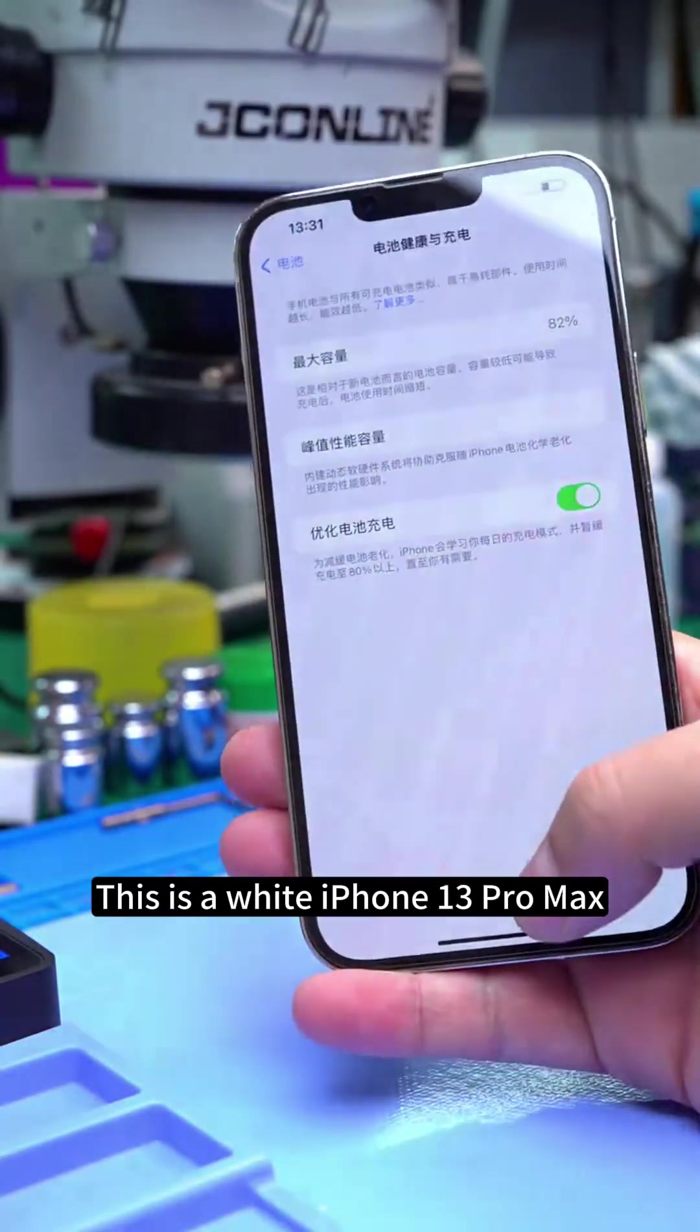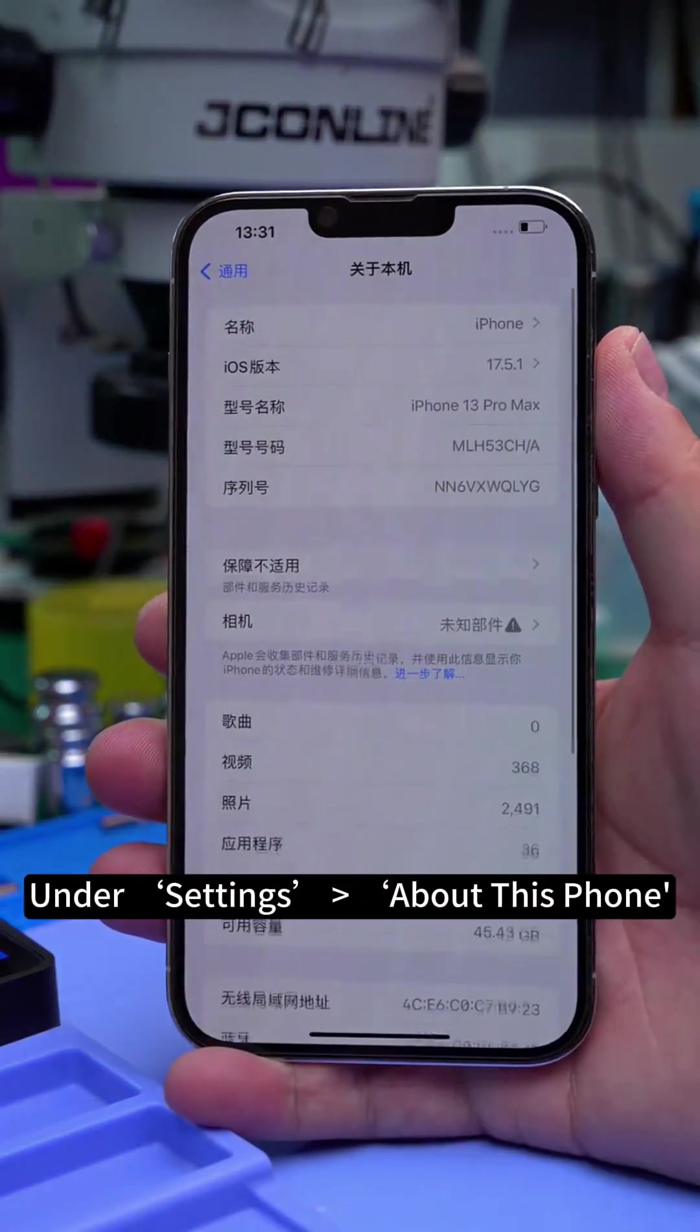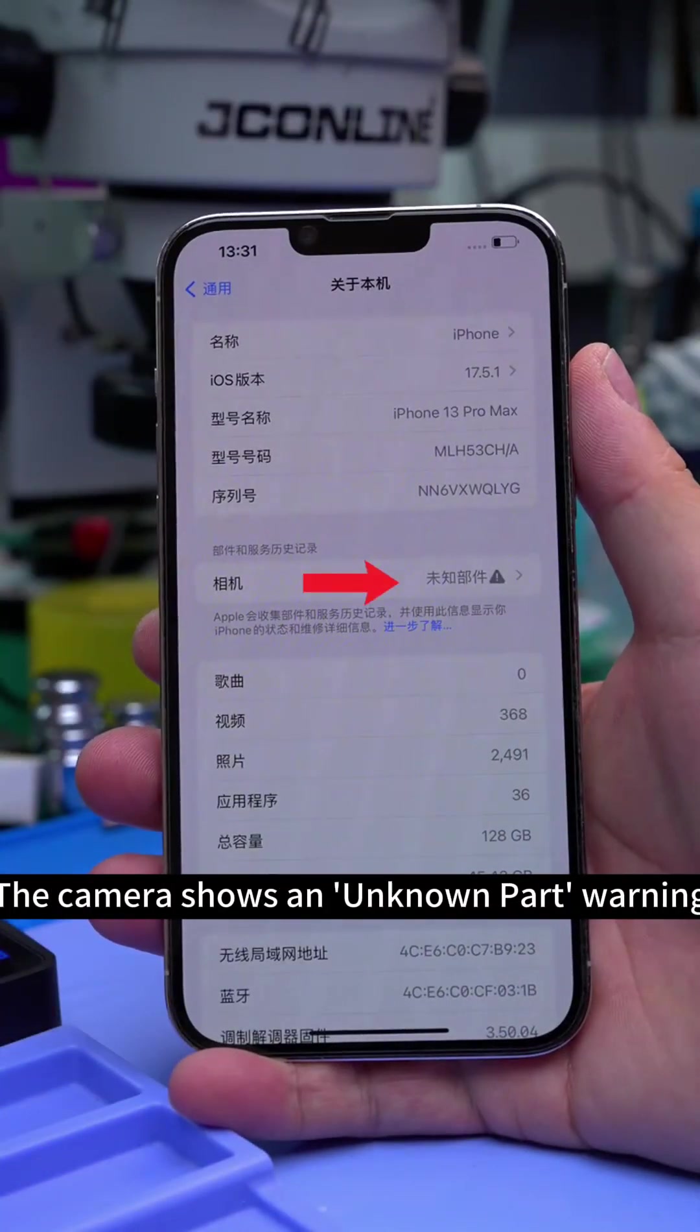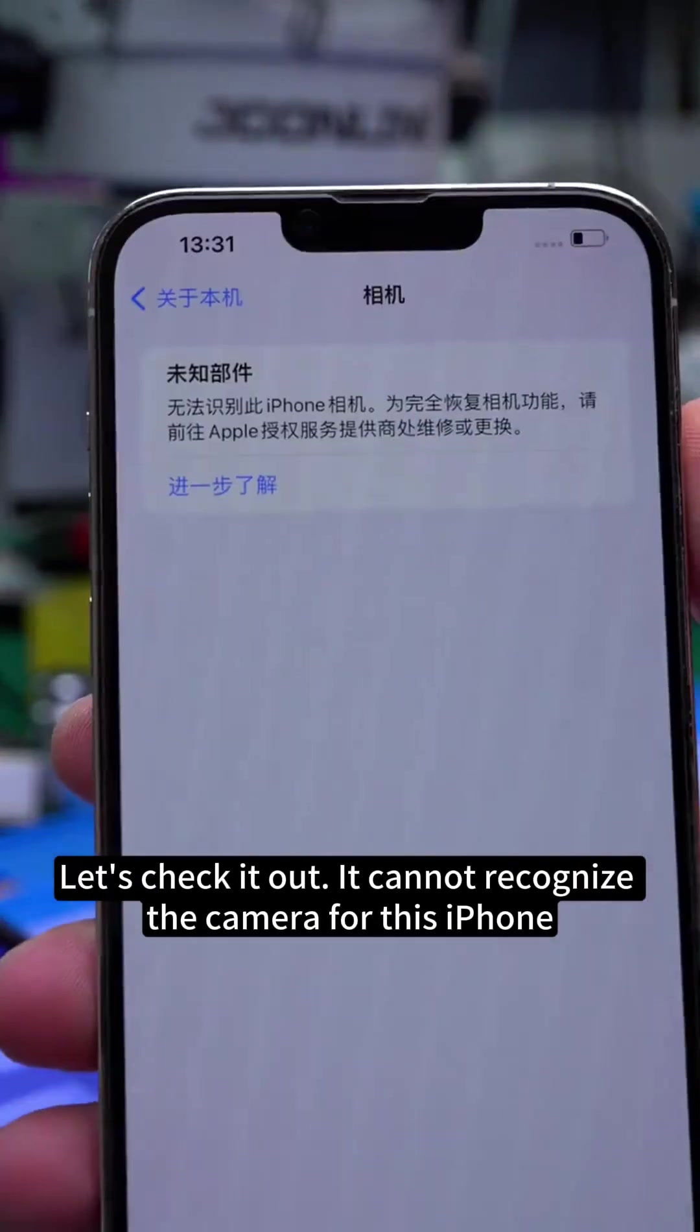This is a white iPhone 13 Pro Max. The battery health is down to 82 percent. Under Settings, About This Phone, the camera shows an unknown part warning. Let's check it out - it cannot recognize the camera for this iPhone.